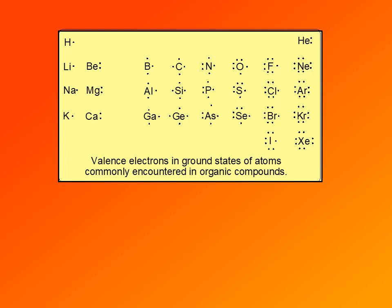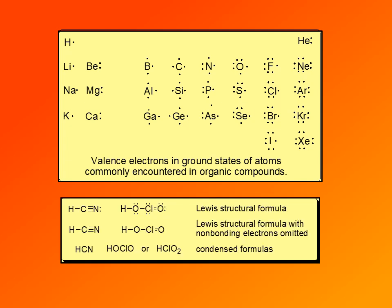Lewis structures do not imply any particular electronic configuration. So electrons may or may not be paired up, but that does not imply any particular electronic configuration. Some attempt has been made to show the electronic configuration of the atom as it is bonded — not in the ground state, but as a bonding atom. But don't give too much importance to it. And here are some examples of Lewis structures.